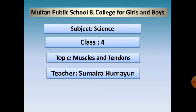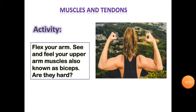Let's start with this little activity. To know what muscles are, or where muscles are in the body, we will do this little activity. All of you have to do this. First, stretch your left arm and put the hand of your right arm on the upper part of your left arm. Feel and see what is there. Have you felt anything hard? Is something hard on the upper part of your arm? Yes, these hard parts are the muscles.